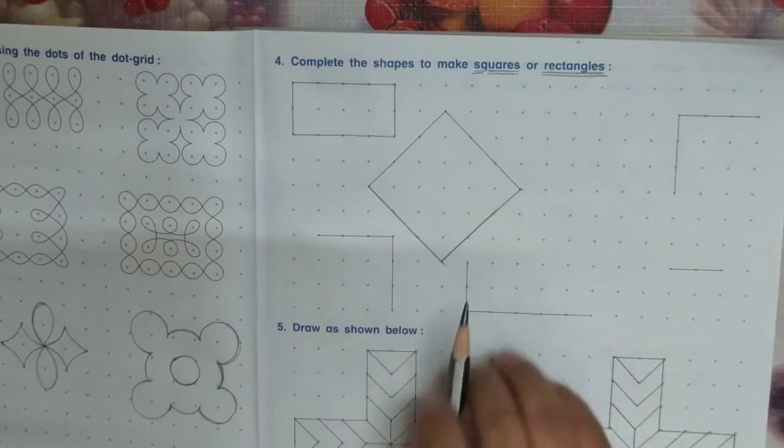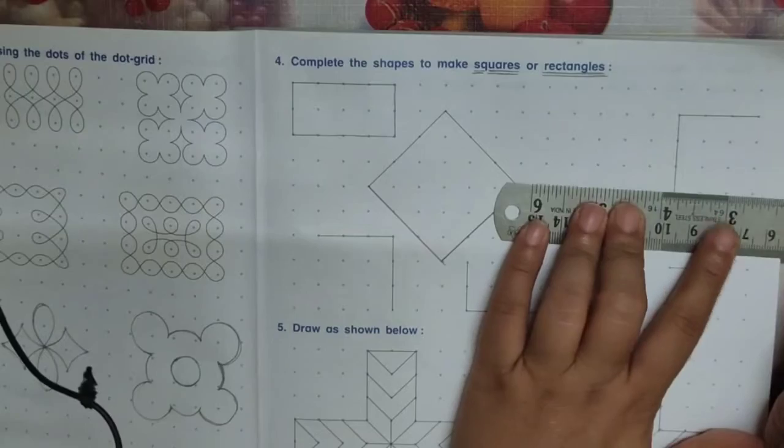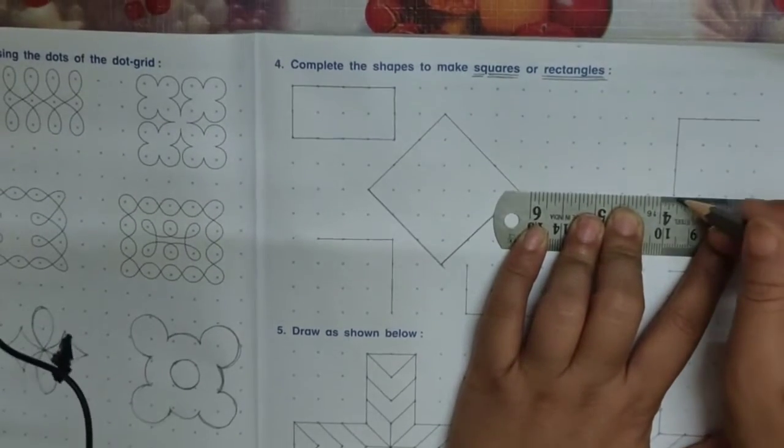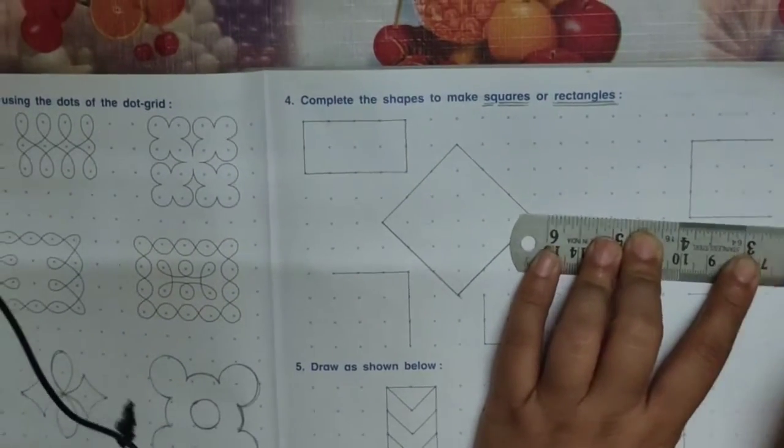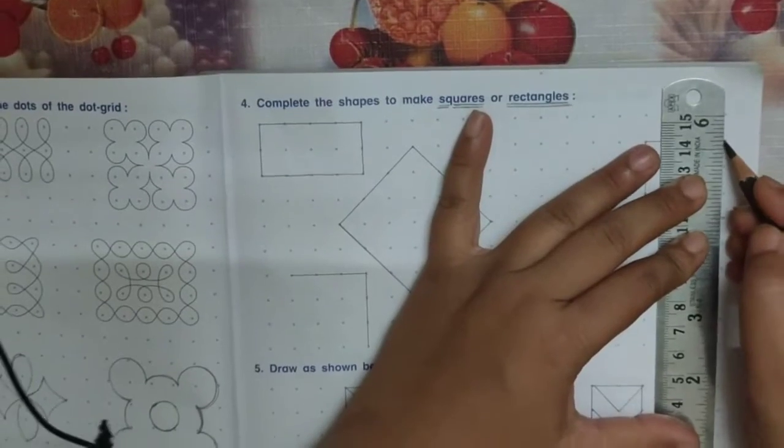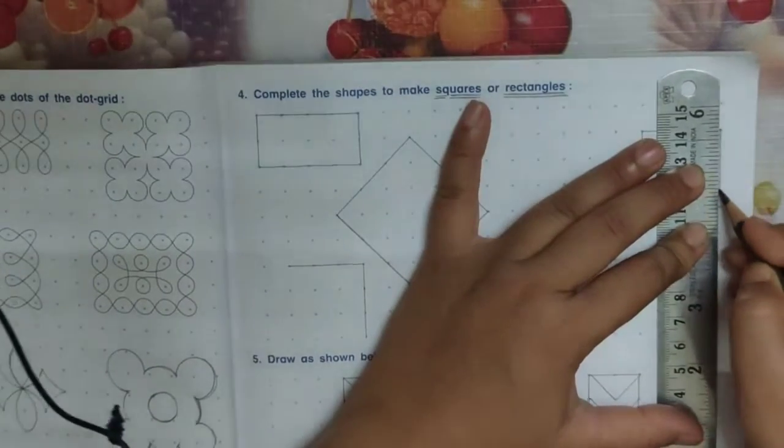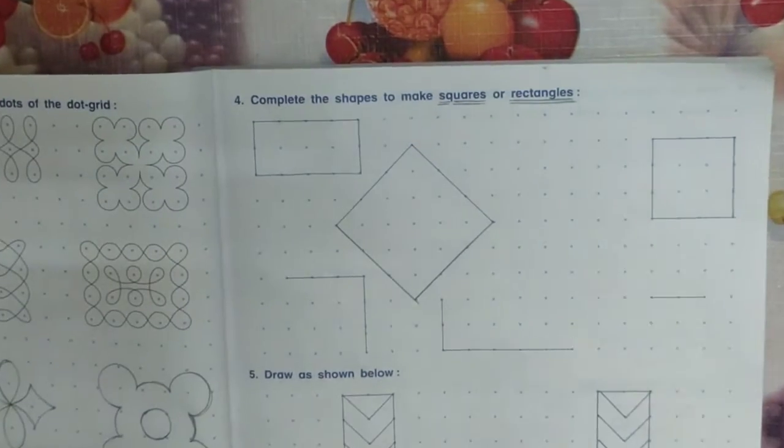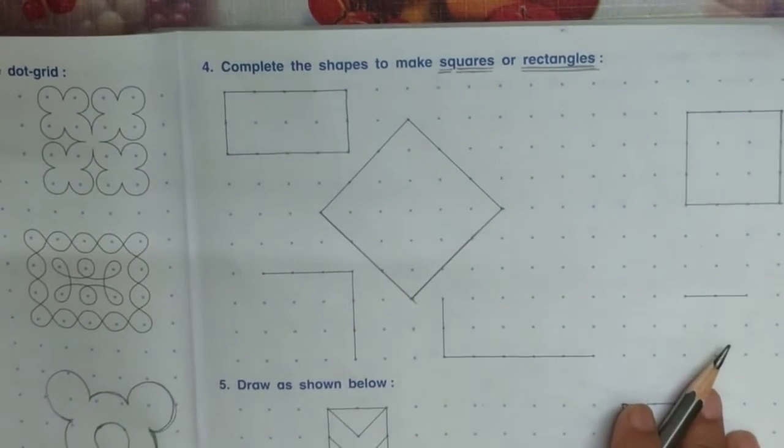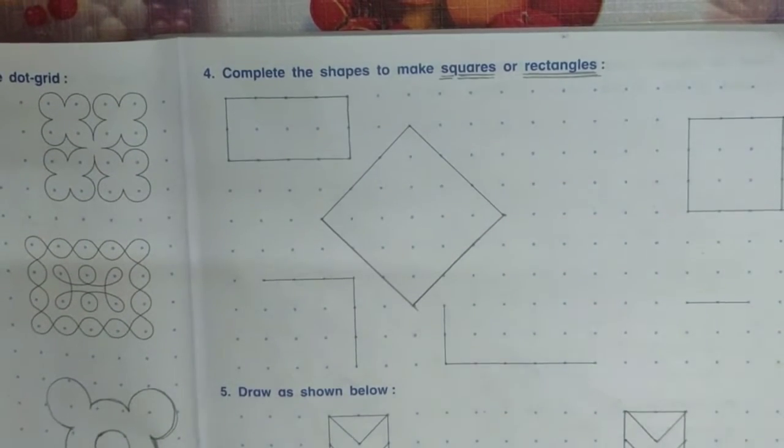This one is the square. Now another one. Remainings you have to draw by your own self. Now see question number 5.